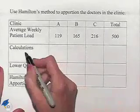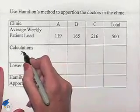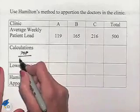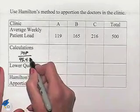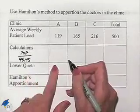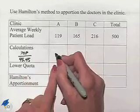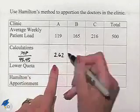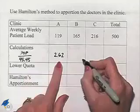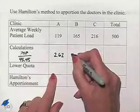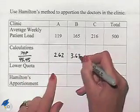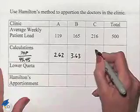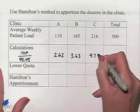So we're going to take the population in each case and divide by this value. In clinic A, we'll come up with a value of 2.62, where we round to the nearest hundredth. In clinic B, we'll come up with 3.63, and in clinic C, we come up with 4.75.